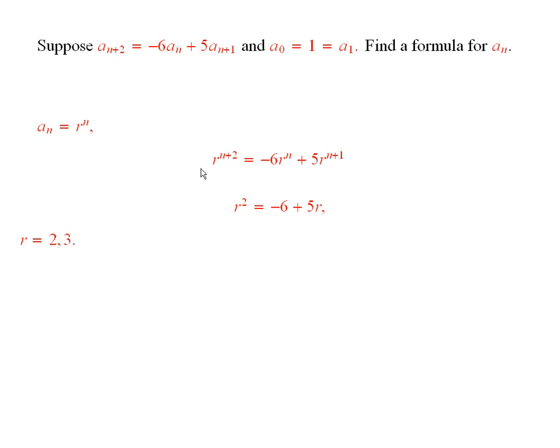So now I'll divide this equation by r to the n, and that gives r squared is equal to minus 6 plus 5r. There are exactly two solutions to this quadratic equation, r equals 2 and r equals 3.